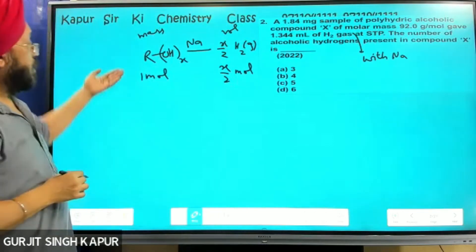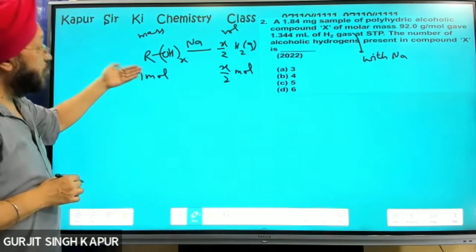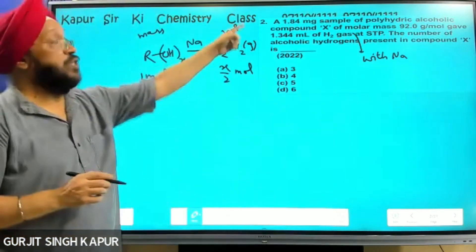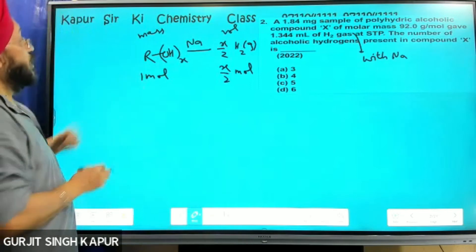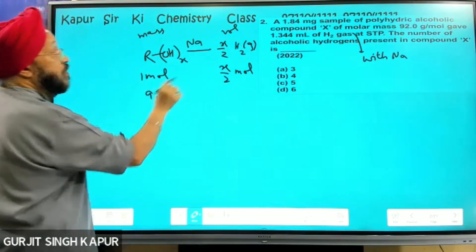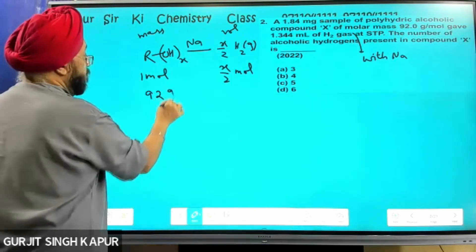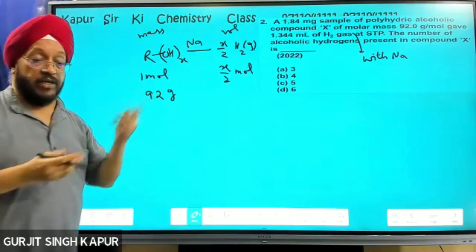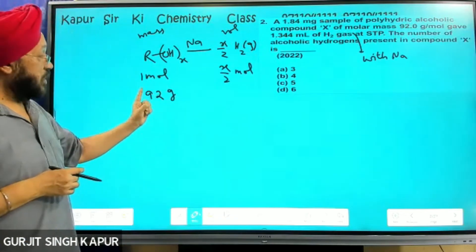As far as this is one mole, I will convert it to the molar mass, because the information is given in the mass. So that is basically 92 grams per mole - 1 mole is 92 grams per mole.